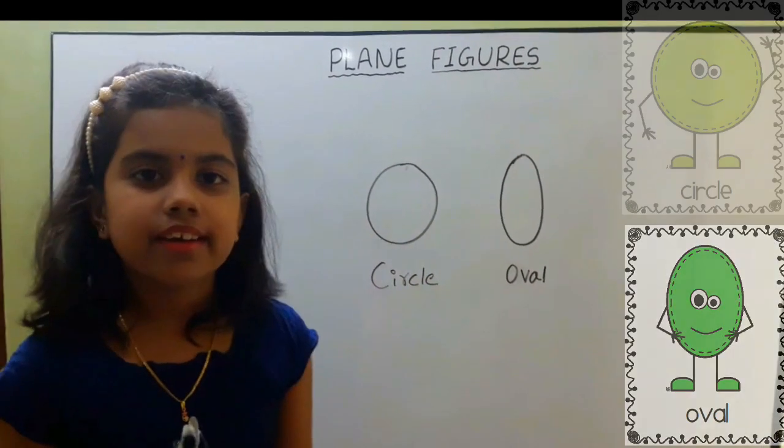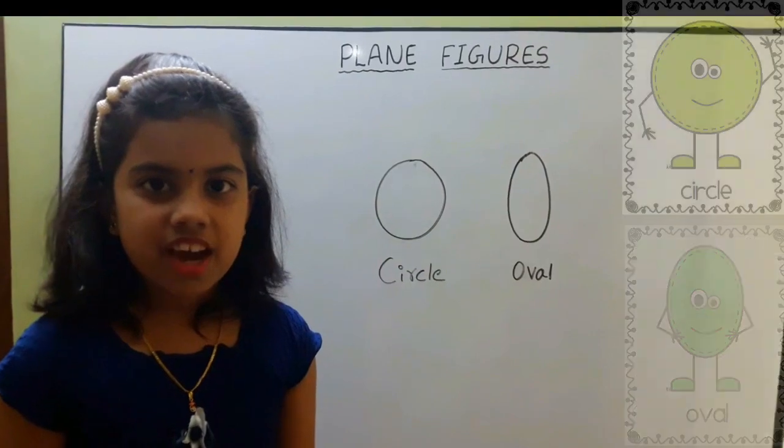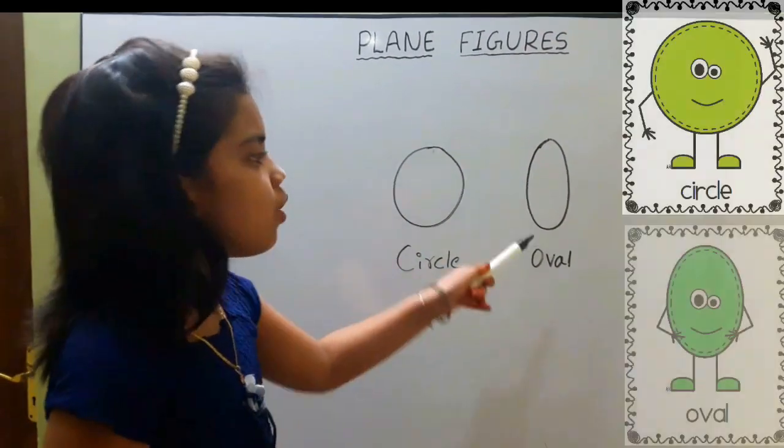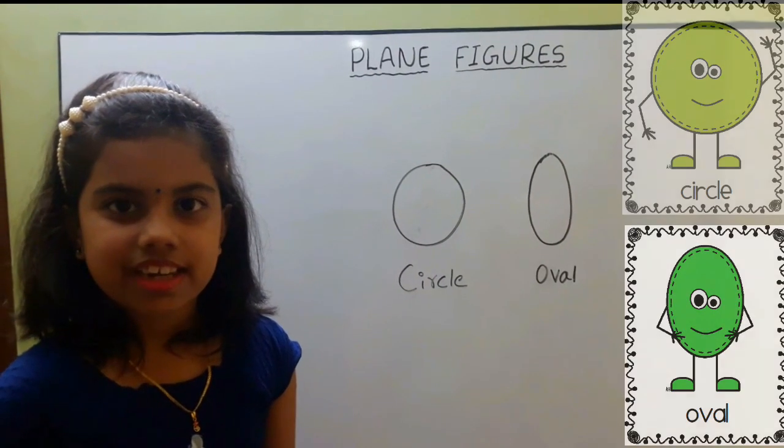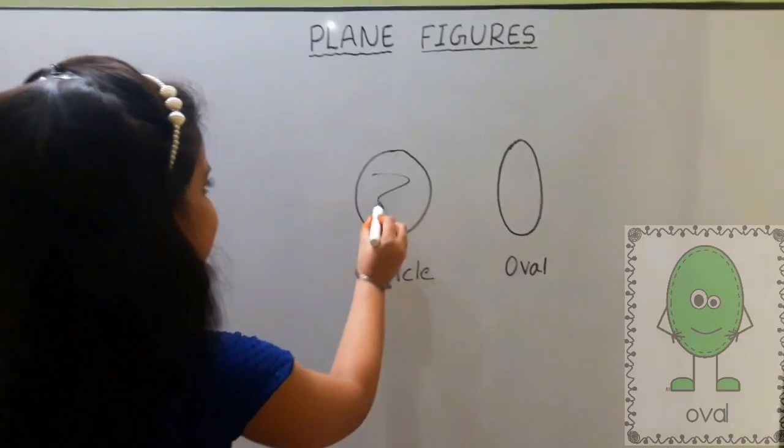Circle and oval are closed plane figures with curves. They have no sides and no corners. The area enclosed inside the circle is called circular region.